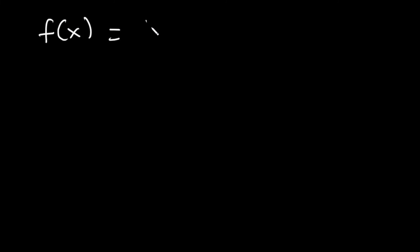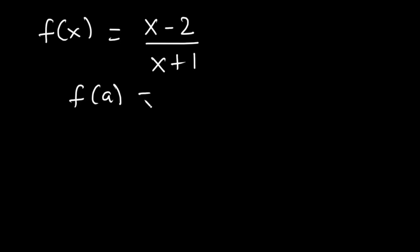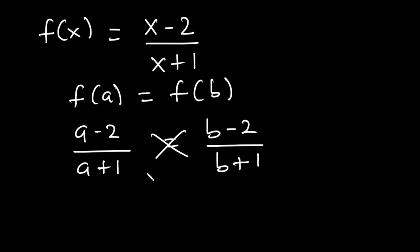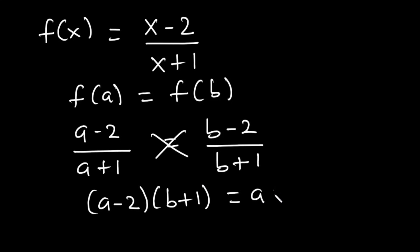Let's try this together. If f(x) = (x−2)/(x+1), is this function one-to-one or not? Setting f(A) = f(B): (A−2)/(A+1) = (B−2)/(B+1). Cross-multiplying gives (A−2)(B+1) = (A+1)(B−2).